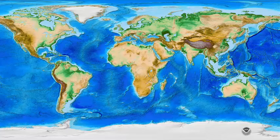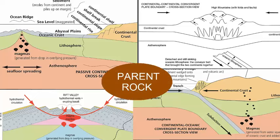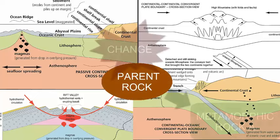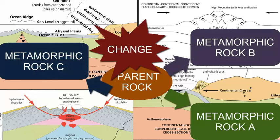Metamorphic rocks can form under a number of geologic settings, anywhere in which temperatures and or pressures are raised. Usually a given parent rock will form very different metamorphic rocks based on the metamorphic conditions, and hence we can look for clues in the rock to help us identify the original geologic formation setting.